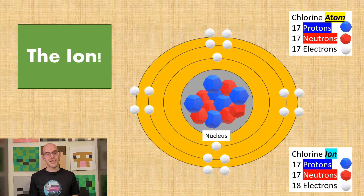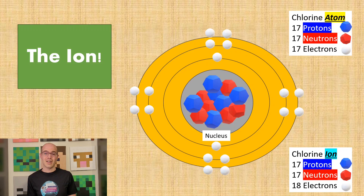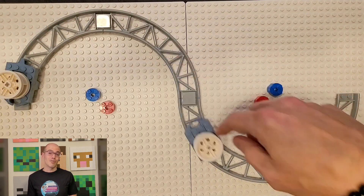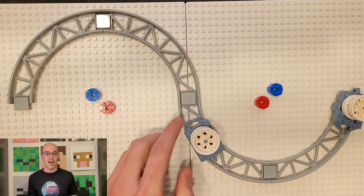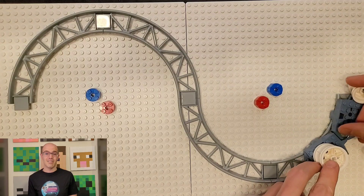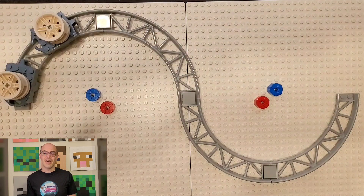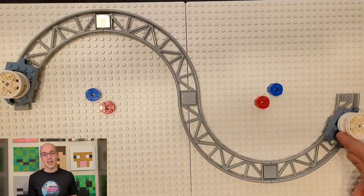Let's start with the basics. An ion is like that friend who's always either gaining or losing something. When an atom loses an electron, it becomes a positively charged ion, aka the 'I'm feeling positive' cation. Conversely, when an atom gains an electron, it becomes a negatively charged ion, aka the 'I've got an extra' anion. This whole electron swapping thing is the fundamental principle behind electricity.